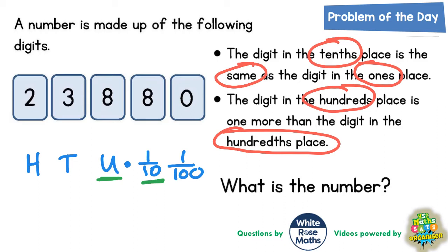So those two digits must be the same. And the only two digits we've got the same is these two eights. So those two digits must be the two eights. And obviously we've got the decimal point in between. So we can cross the eights out because we've used those.